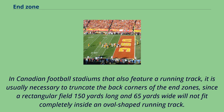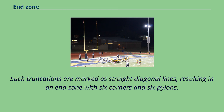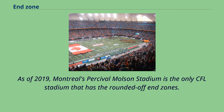In Canadian football stadiums that also feature a running track, it is usually necessary to truncate the back corners of the end zones, since a rectangular field 150 yards long and 65 yards wide will not fit completely inside an oval-shaped running track. Such truncations are marked as straight diagonal lines, resulting in an end zone with six corners and six pylons. As of 2019, Montreal's Percival Molson Stadium is the only CFL stadium that has the rounded-off end zones.